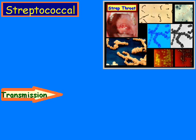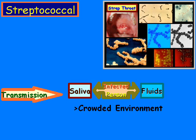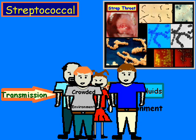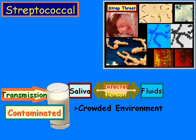How is it transmitted? Somebody comes into contact with an infected person and their nose, saliva, or fluids, and that person comes into contact with that — that's how it's transmitted. It can also be transmitted in a crowded environment such as a dormitory, a school, a shopping mall, anywhere where there's a lot of people. There can also be contaminated food, more particularly like milk, for example.